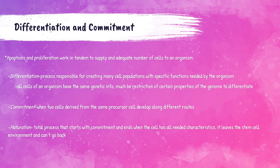Apoptosis is programmed cellular death — every cell has a programmed lifespan, and at the end of that lifespan, they die. Proliferation is the process of the cell growing and dividing. Apoptosis and proliferation have to work together to supply adequate numbers of cells within the peripheral bloodstream. We don't want decreased cell levels from insufficient proliferation, and we don't want too many blood cells from insufficient apoptosis. They have to balance each other — not too much or too little.